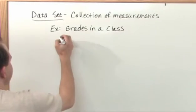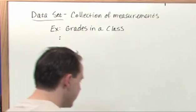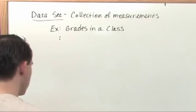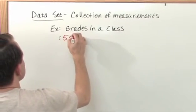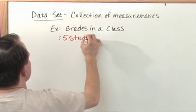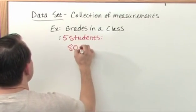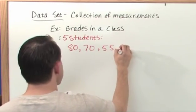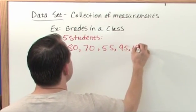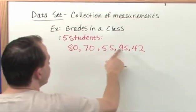So what if we had some grades in the class that we collected, and what if the grades were as follows? We have five students and the grades are 80, 70, 55, 95 and 42. So we had one A, a B, a C and two pretty low Fs.